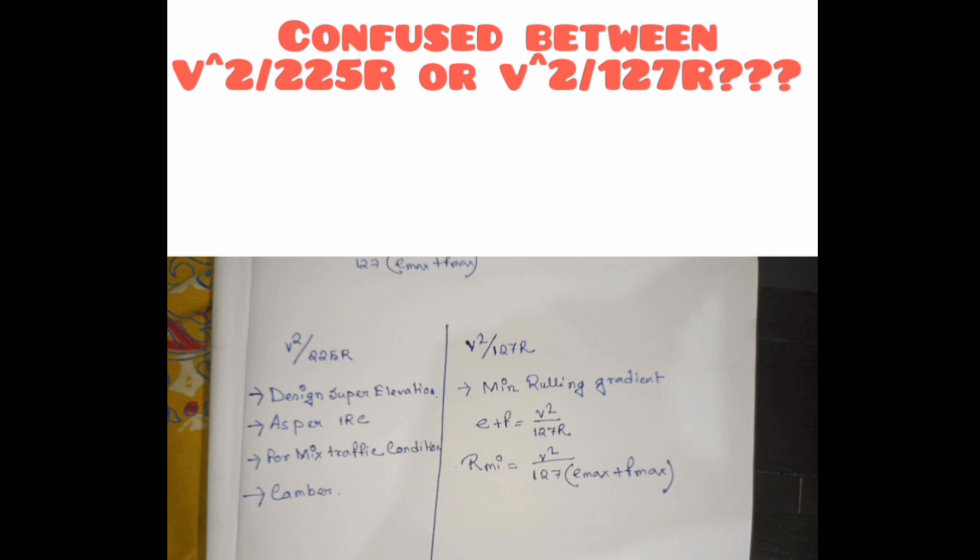And if we see minimum ruling gradient kind of terminology, then we will use e plus f is equal to v squared by 127r. By this formula we can find out r minimum, minimum radius.